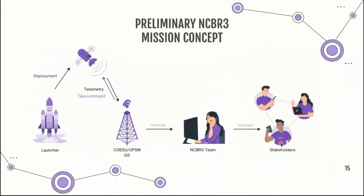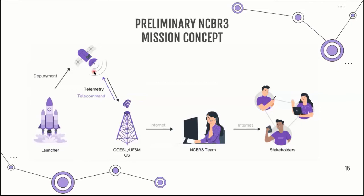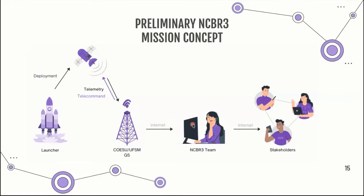And now a preliminary Nanosat mission concept is shown. This is an overview in a very simplified way to show the mission, given that this is the beginning and many details haven't been developed yet. As proposed: we first launch, then after launch it's going to be deployed, and as operational they will use telemetry and telecommand with the ground station and transfer data. After that, the Nanosat CBR 3 team will have the data and will pass it to stakeholders.